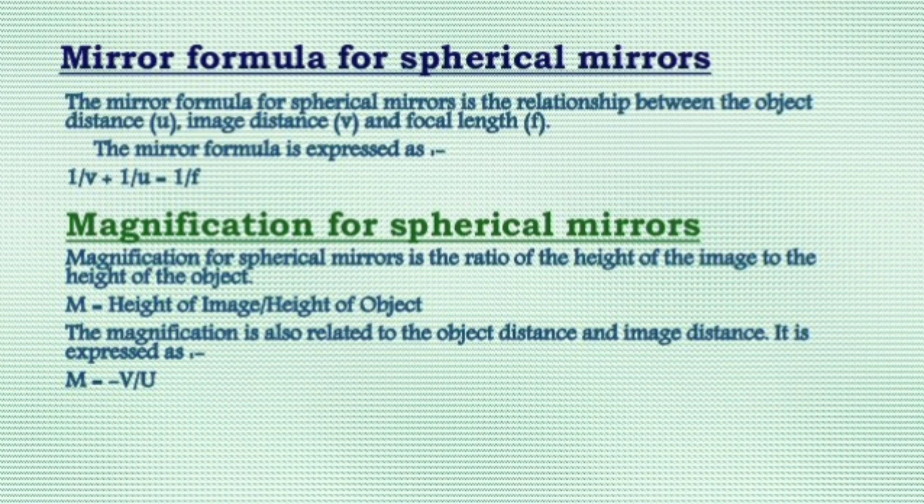Magnification for a spherical mirror is the ratio of the height of the image to the height of the object. That is, M = height of the image / height of the object.